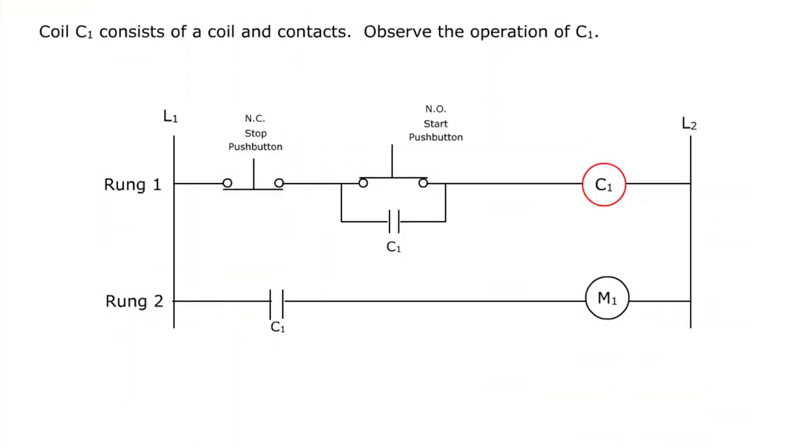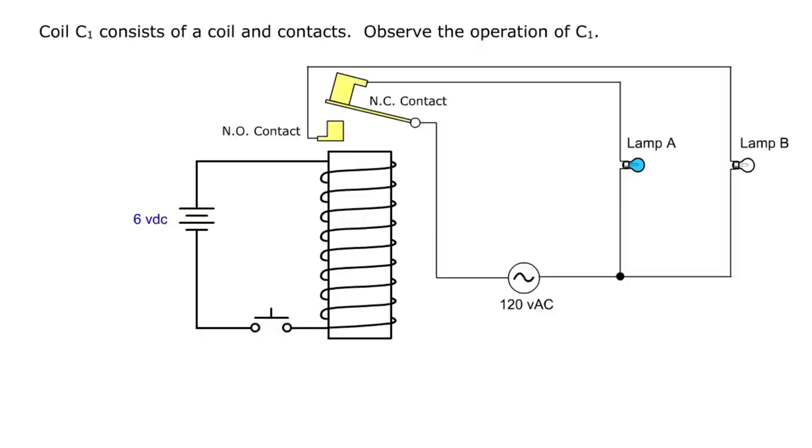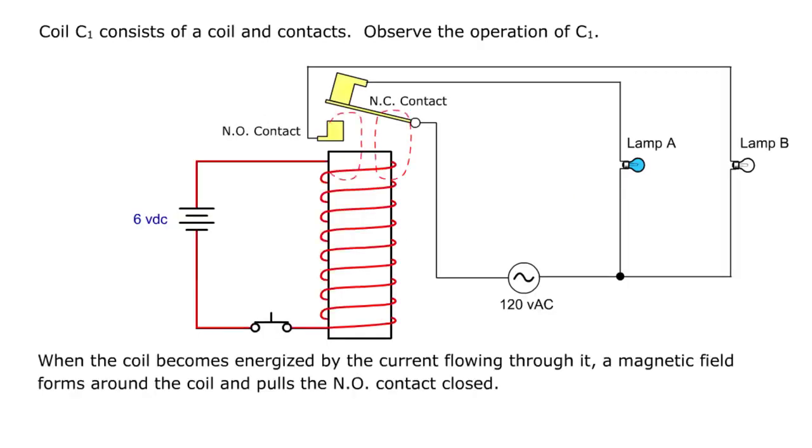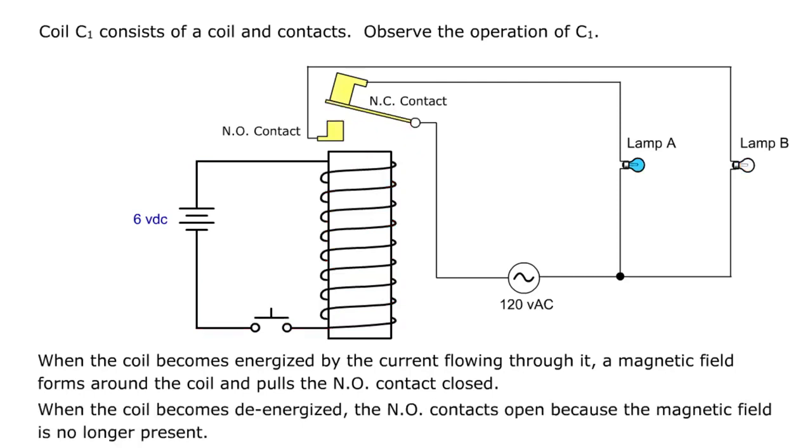Coil C1 consists of a coil and contacts. Observe the operation of C1. When the coil becomes energized by the current flowing through it, a magnetic field forms around the coil and pulls the NO contact closed. When the coil becomes de-energized, the NO contacts open because the magnetic field is no longer present.